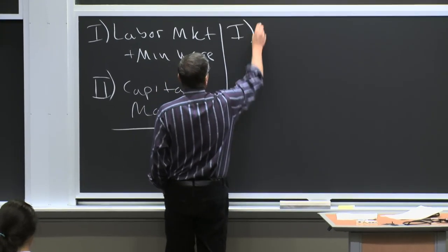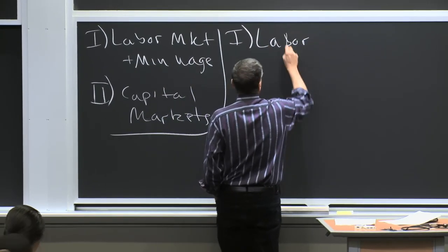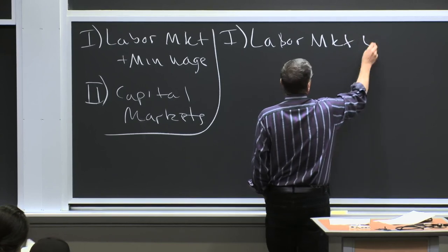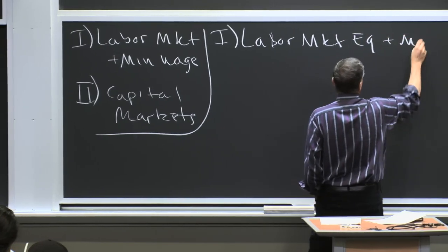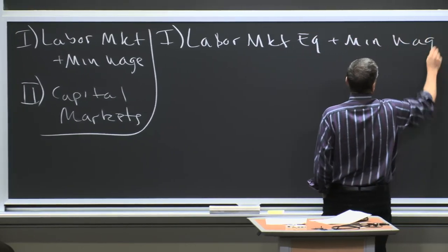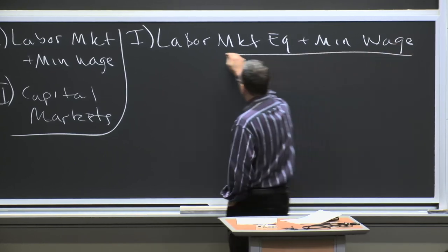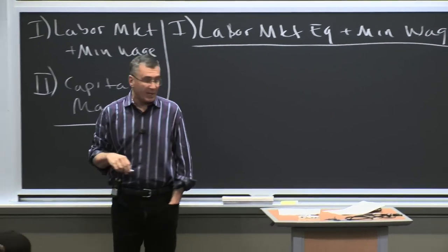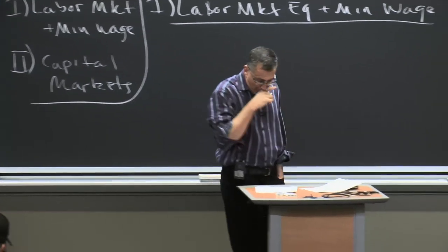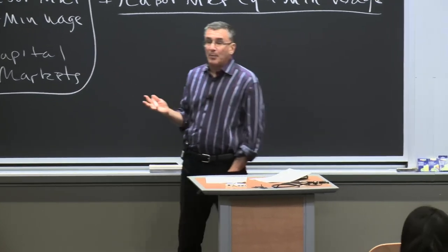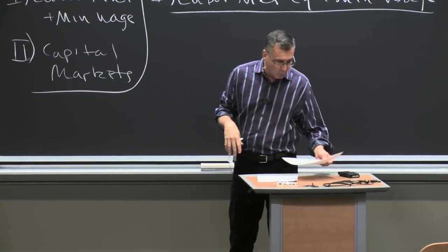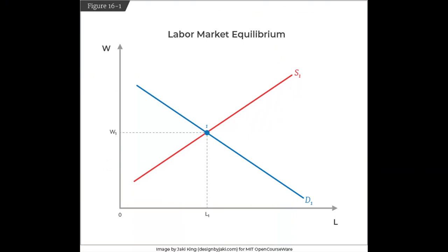Today I want to talk about the labor market equilibrium and how it's affected by the minimum wage, because it's an interesting case which allows us to introduce some complications to how we think about the labor market. So let's go to figure 16.1. The labor market, like any other market, has a price and a quantity. The quantity is the amount of labor supplied — that's on the x-axis. The price is the wage — that's on the y-axis.